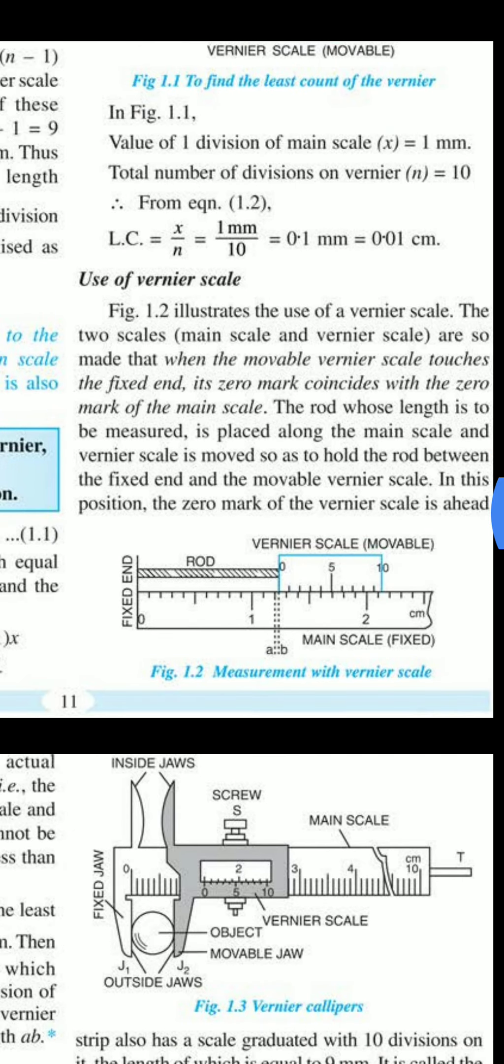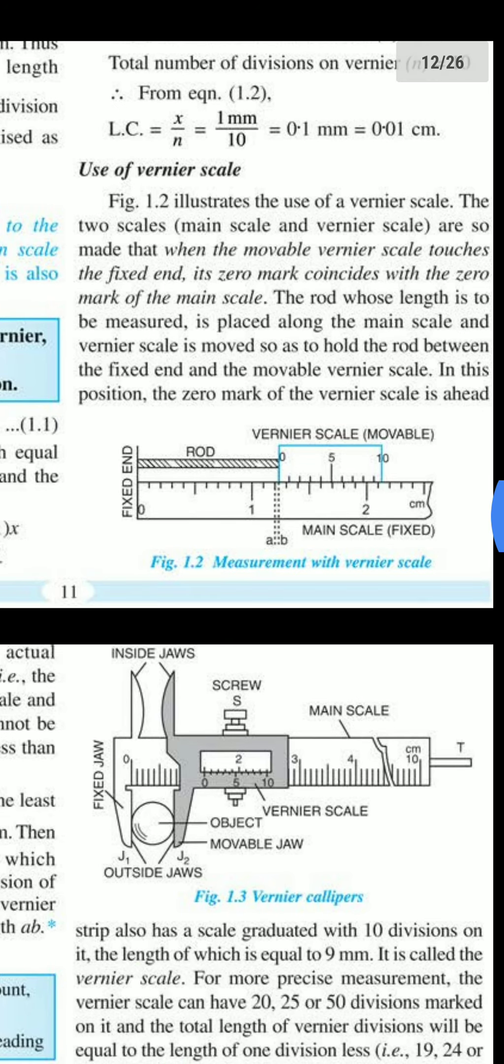What are we doing here? They have fixed a rod in the jaws. See Figure 1.3 - these are two movable jaws. In between that, we have to fix whatever we want to measure.